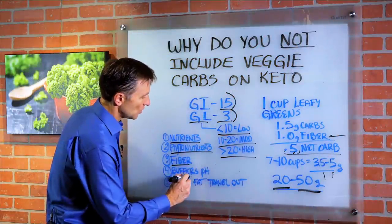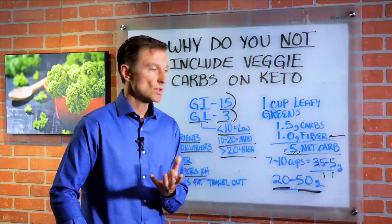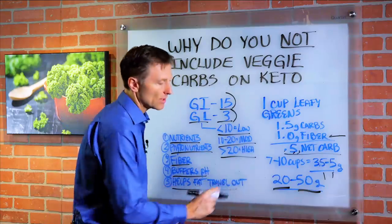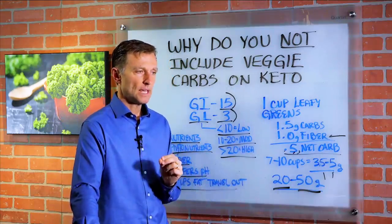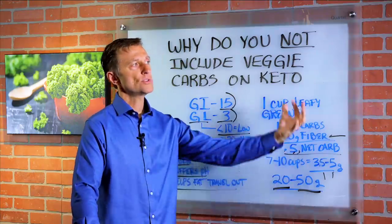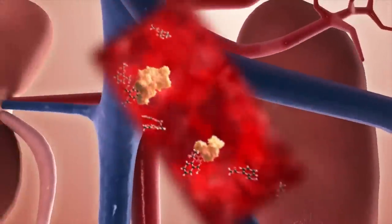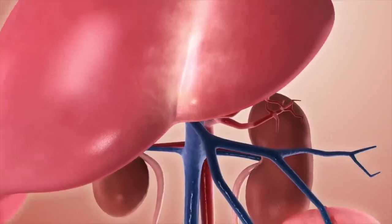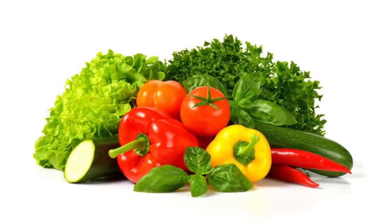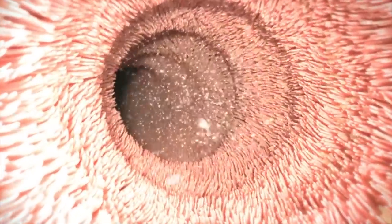Because vegetables are alkaline, they will buffer the acidic pH from the meat you consume — another benefit. Lastly, they help fat travel out of your body. If you're consuming just fat and meat without vegetables, and you're mobilizing fat from fat cells through the liver, there's a chance some of that fat can get stuck in the liver. Vegetables help with fat elimination through the liver, out through the gallbladder, and through the colon.